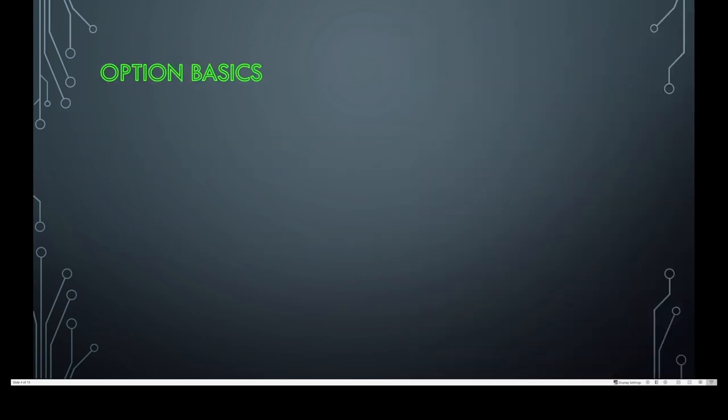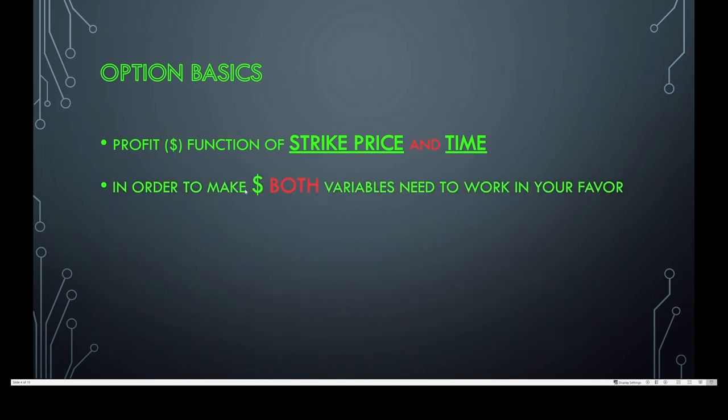Option basics. Essentially an option is a profit function of strike price and time. You're determining what you believe the strike price of something's going to be and when it's going to be at that value. The problem here is that you have two independent variables that both need to work in your favor for you to make money.